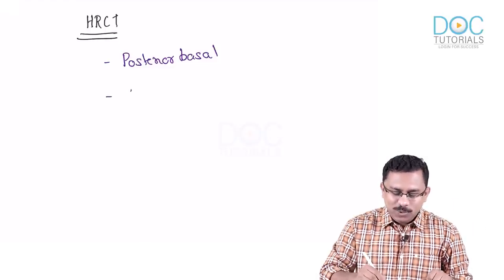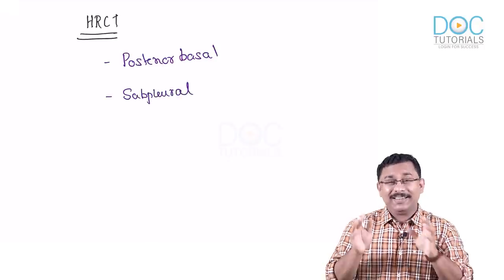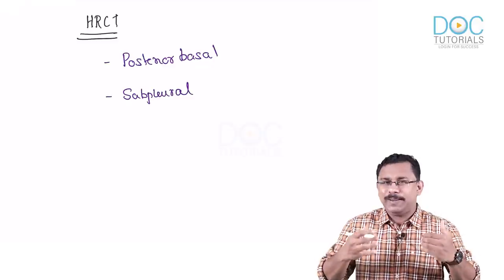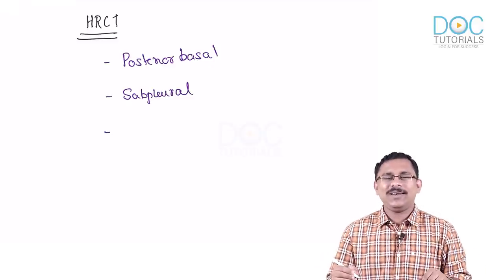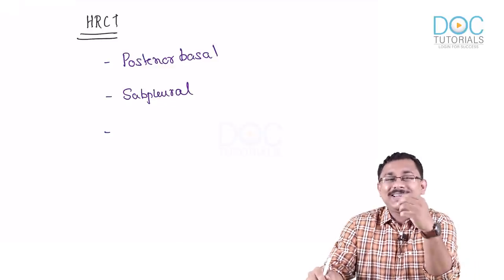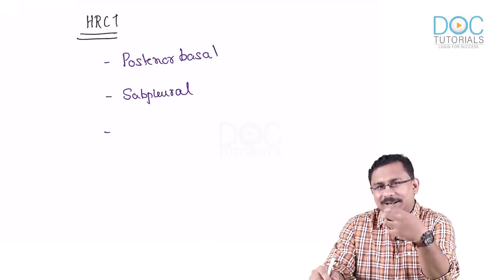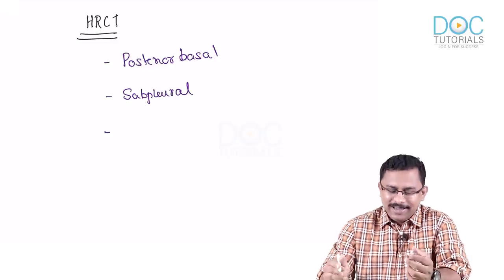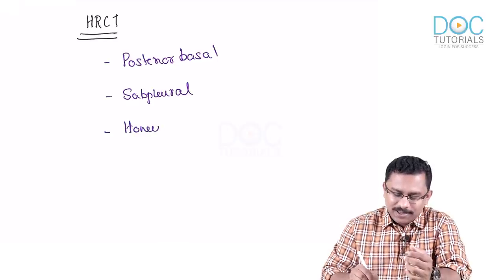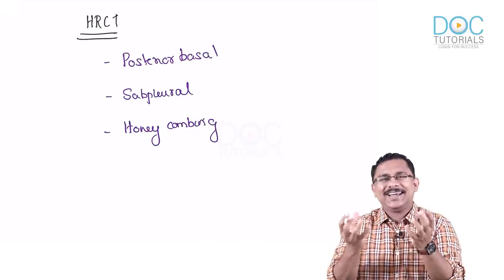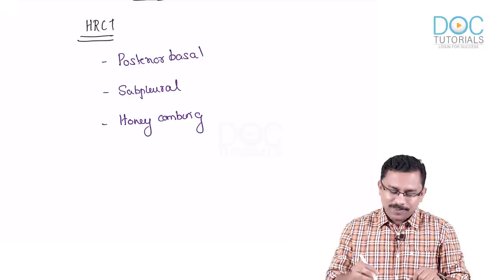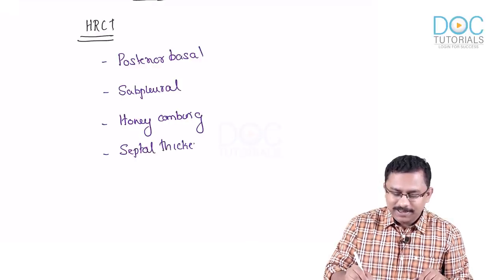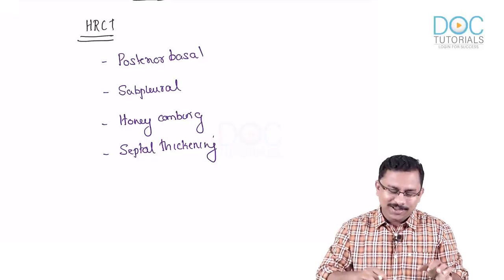On HRCT in IPF, the UIP pattern shows: predominant posterior basal involvement, definite subpleural involvement — the subpleural region is never spared. The lung architecture is destroyed, and you will see honeycombing — sac-like dilatations — as well as septal thickening.